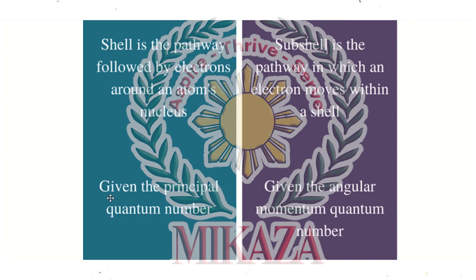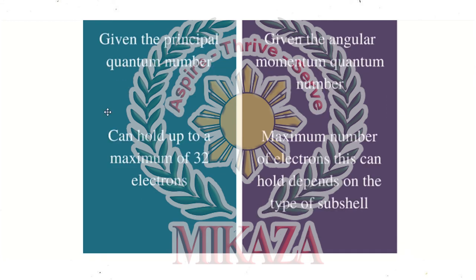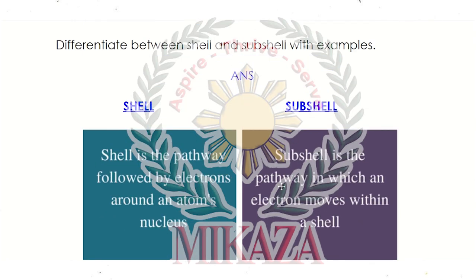The shell is given the principal quantum number (n = 1, 2, 3, 4…), while the sub-shell is associated with the angular momentum quantum number. These are the key differences between shell and sub-shell.